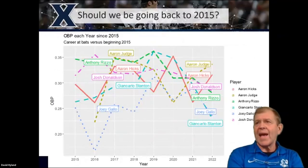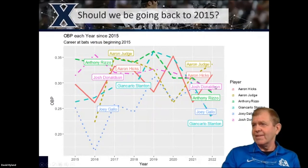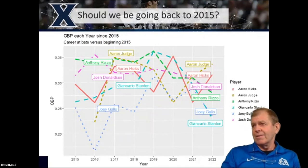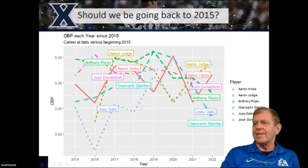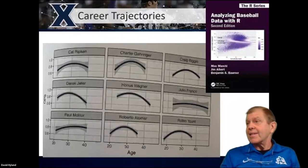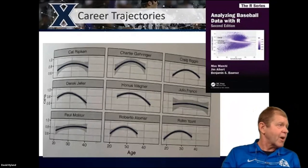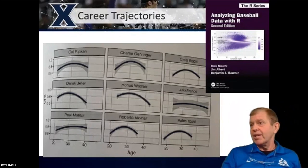Then the question becomes: should I be going back to 2015? I graphed everybody's on base percentage by year from 2015 to today, and you see there's a lot of crossover, a lot of noise, which makes me think: should I be using the last eight years of data? I know Sean in the previous presentation recommended 'Analyzing Baseball Data with R' — I'm going to plug that as well. That's how I learned R and R Studio, and all the graphs in this presentation were done in R. I strongly recommend it — treat it like a cookbook.